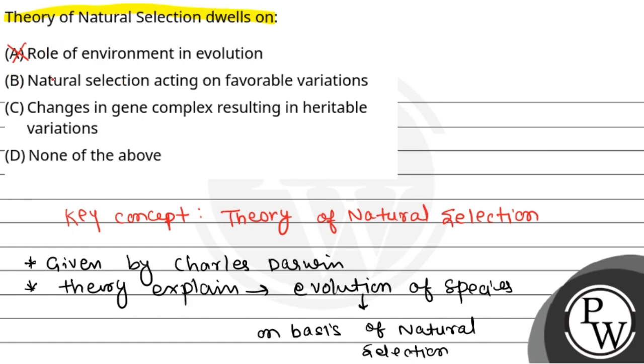Option B is natural selection acting on favorable variations. This is correct because the core idea is that favorable traits will survive and reproduce.